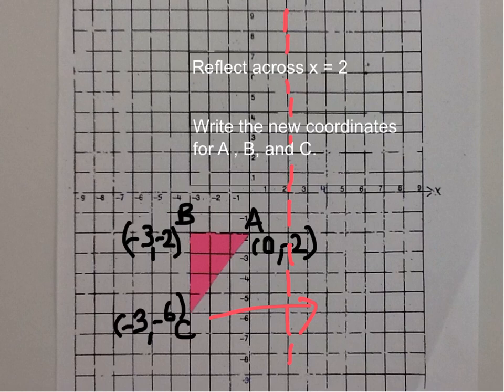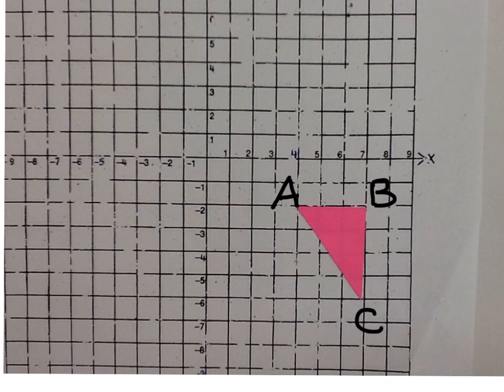Welcome back from pausing the video. Let's check the position of the triangle after we reflect it. Now it's over here. Our line of reflection was here at x equals 2. And these are our new positions for A, B, and C.